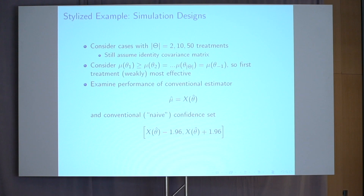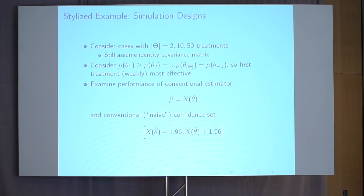To explore whether this bias looks like a big deal numerically, let's extend that toy example. Consider cases with 2, 10, or 50 treatments, again with an identity variance-covariance matrix. I'll assume treatment 1 is weakly more effective than treatment 2, but all remaining treatments are equally effective — so mu_theta_1 versus mu_theta_{-1}, the true average outcome under all other treatments. I'm going to look at the performance of the conventional estimator — just the estimated effectiveness of the treatment I'm recommending — as well as the conventional, or more pejoratively naive, confidence set, which adds and subtracts 1.96 standard errors.